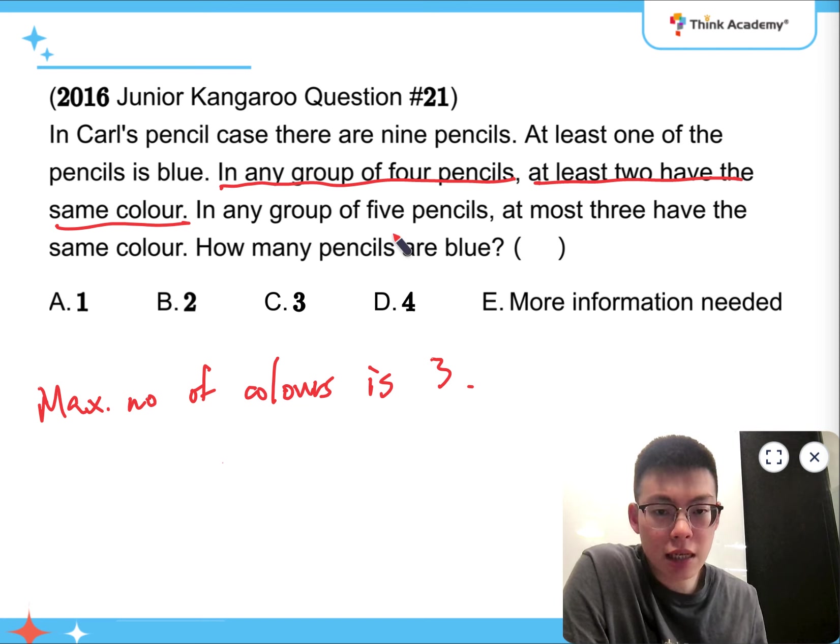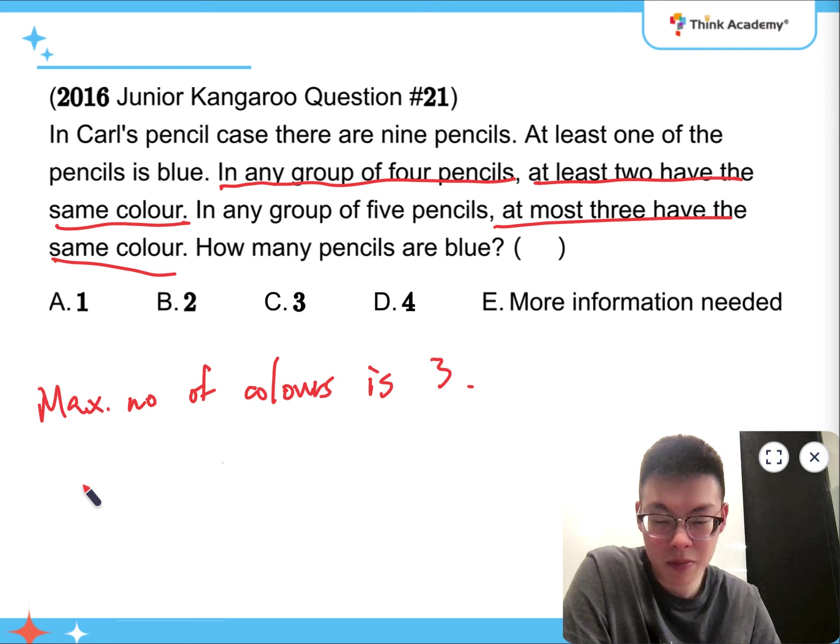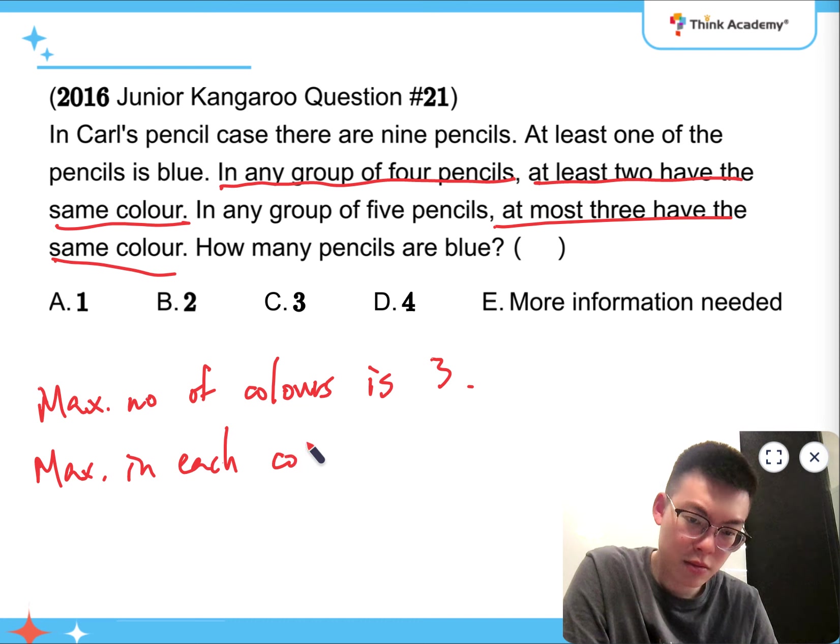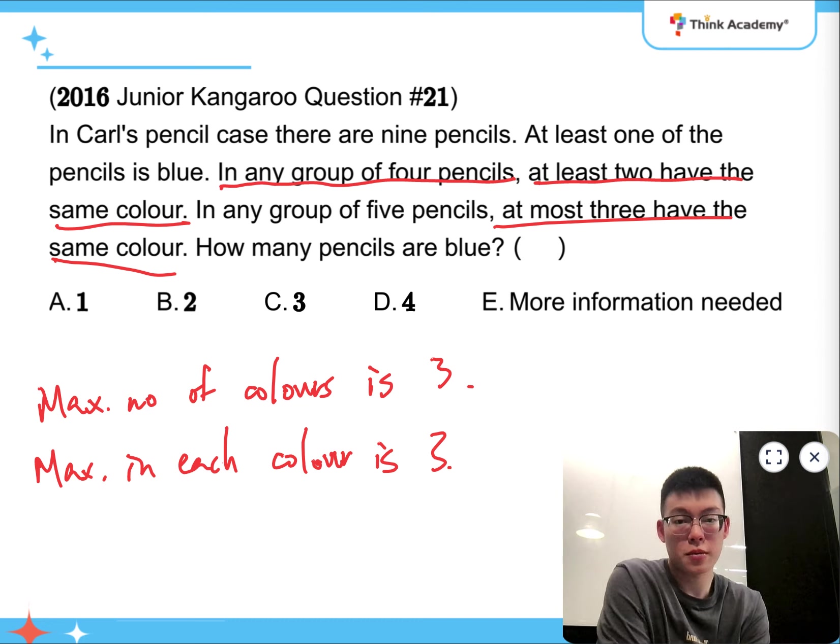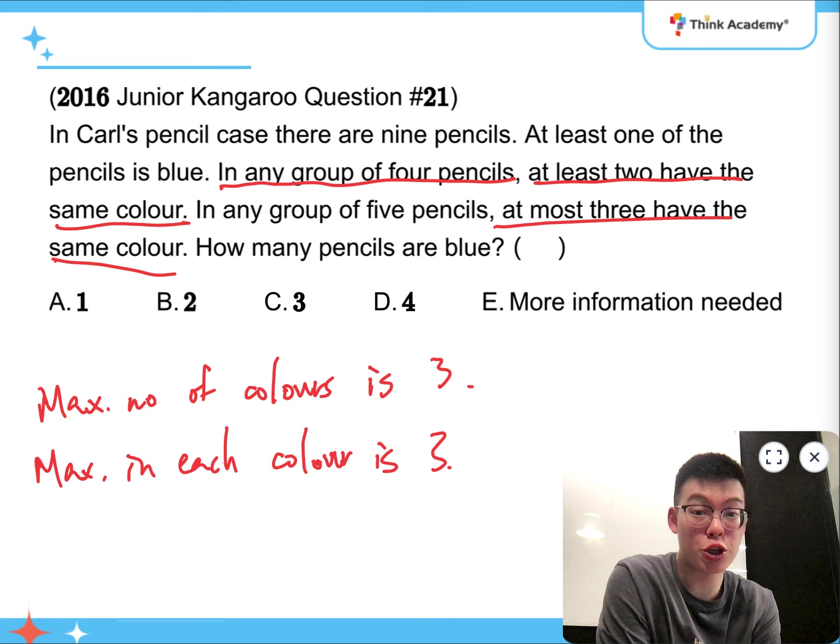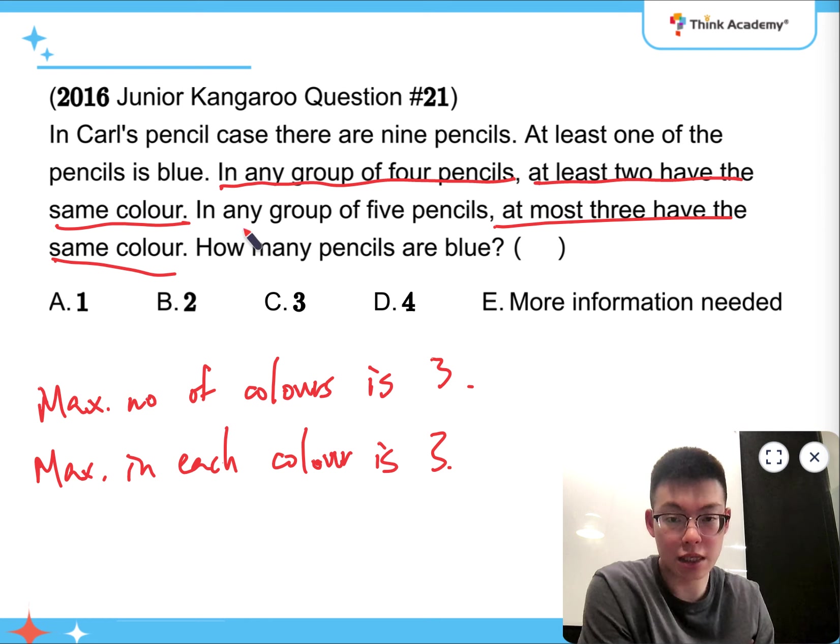And it says that in any groups of 5 pencils, at most 3 have the same color. Which means that the maximum number of pencils in each color is also 3. Otherwise, I can't guarantee that at most 3 of them have the same color. Because I can definitely pick 4 of a kind in any groups of 5, right? Because it says any group.